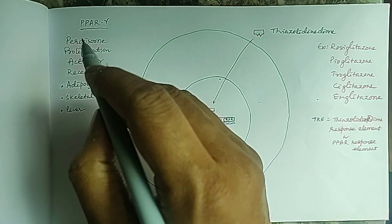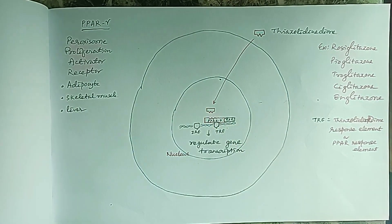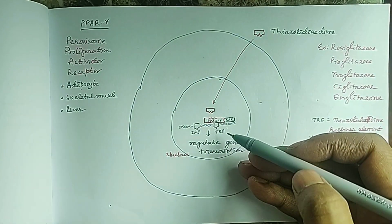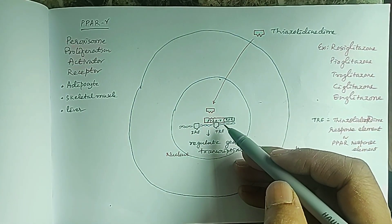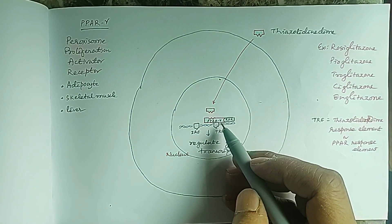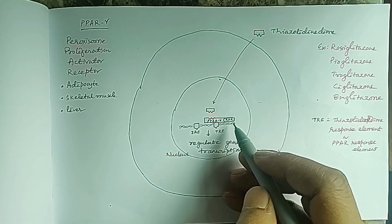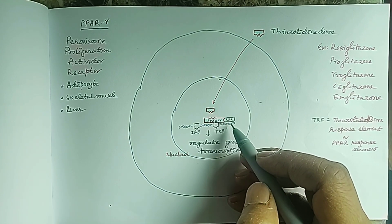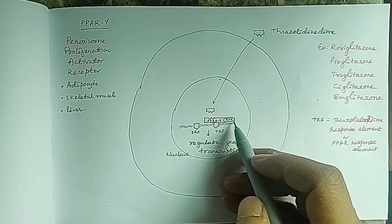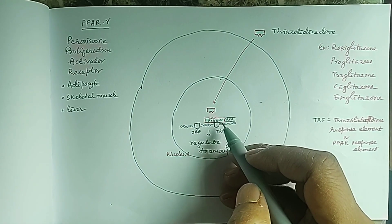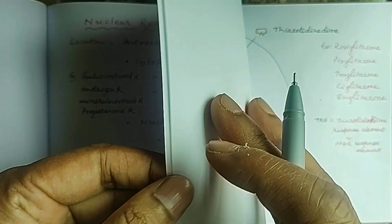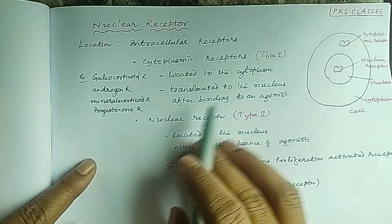Namaskar, today we will study the peroxisome proliferation activated receptor, which is a type of nuclear receptor located inside the nucleus. It is present as a dimer with another receptor called the retinoic acid receptor RxR. So PPAR gamma and RxR are present as a dimer inside the nucleus.